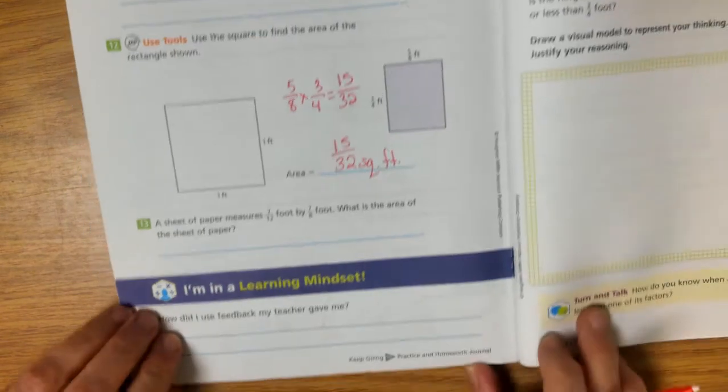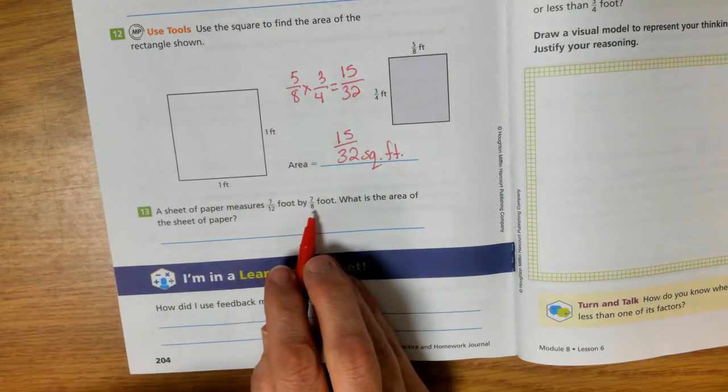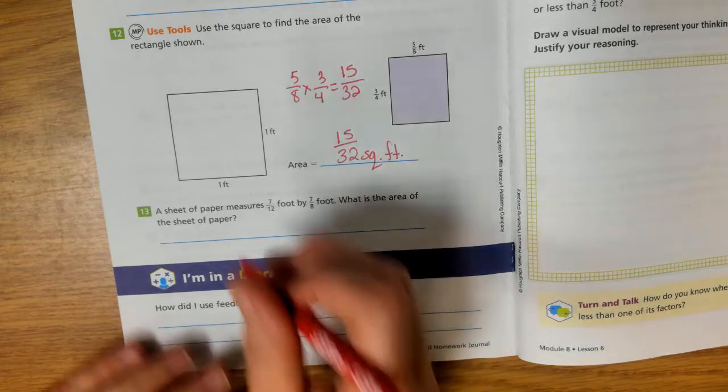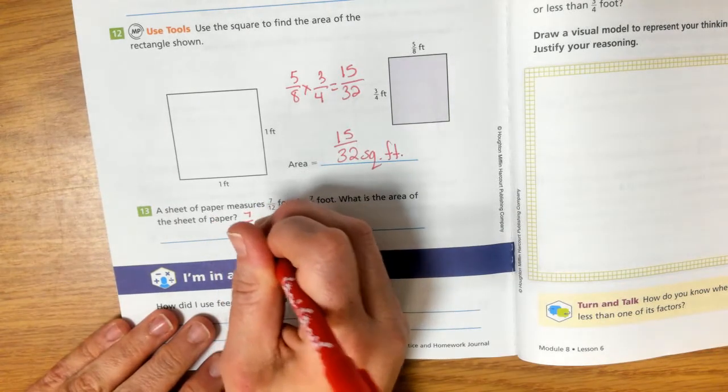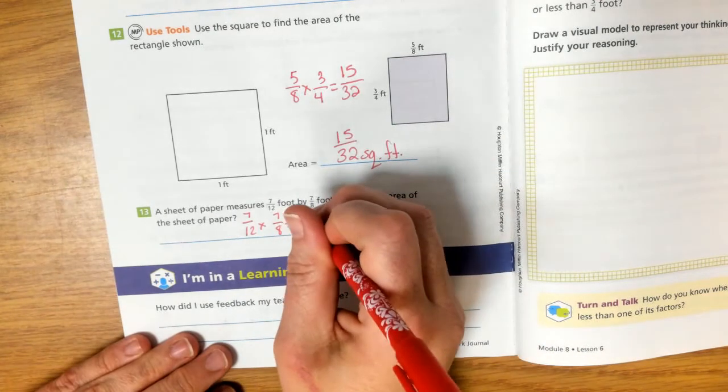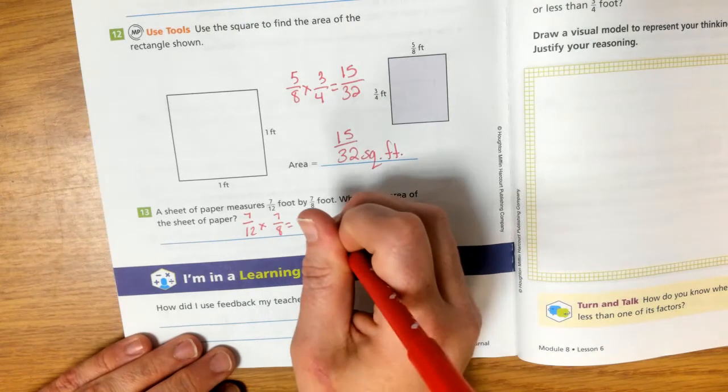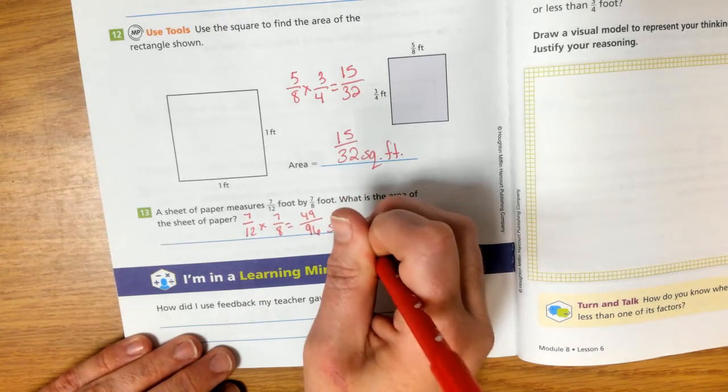And the last one, 7 twelfths. So a sheet of paper measures 7 twelfths foot by 7 eighths foot. What is the area of the sheet of paper? 7 twelfths times 7 eighths. 7 times 7 is 49. 12 times 8 is 96. 49 96ths square feet.